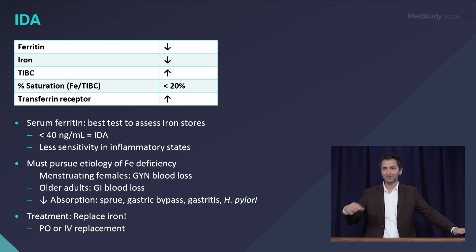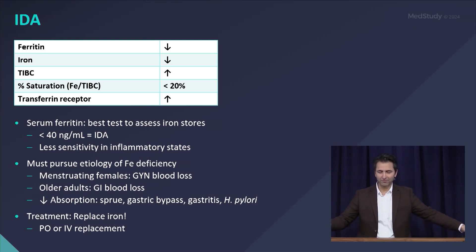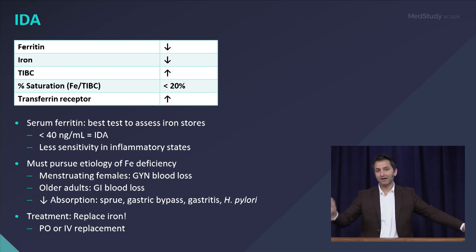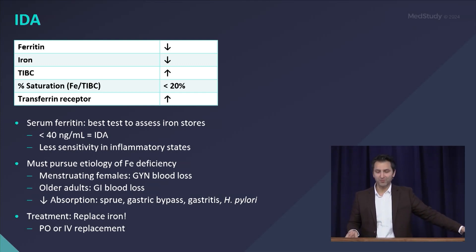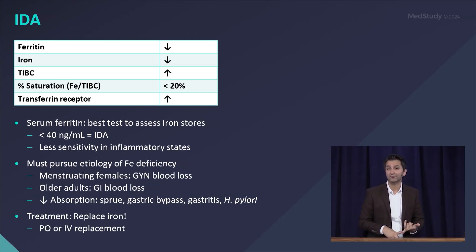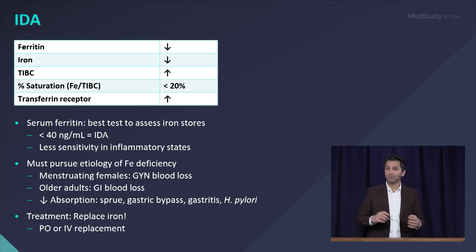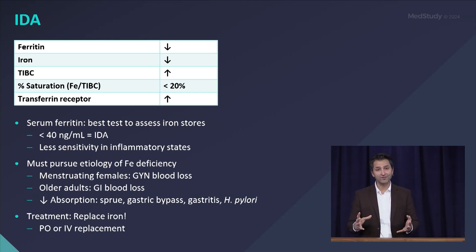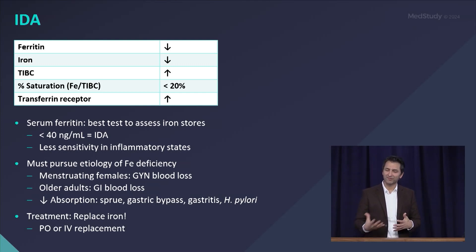You want to think about stool testing, colonoscopy, and a careful history and physical exam. Also recall that in a minority of patients, it's not a blood loss problem — it could be an absorption problem. A common one we often see now is patients post-bariatric surgery who, some years later, if not on appropriate vitamin supplementation, will present with microcytic anemia and iron deficiency.